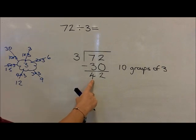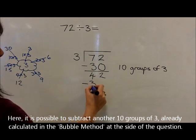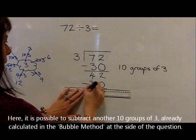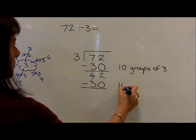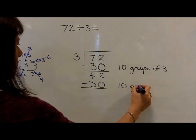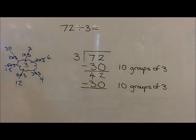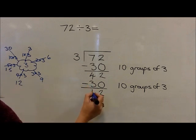We now work from 42, and we can subtract another 10 groups of 3, which are 30. Once again, we record at the side that we are subtracting another 10 groups of 3, and then carry out the subtraction. So 2 take away 0 is 2, and 40 take away 30 is 10.